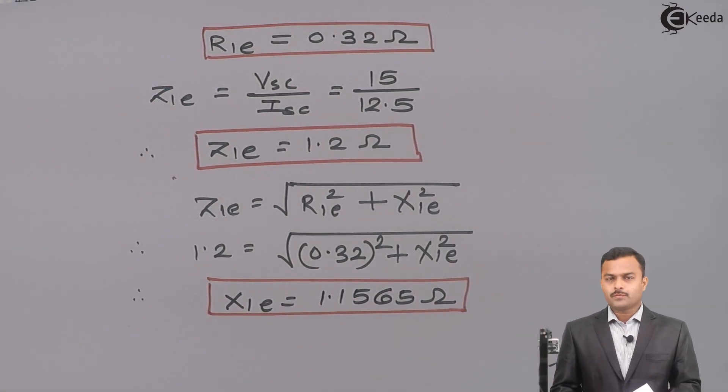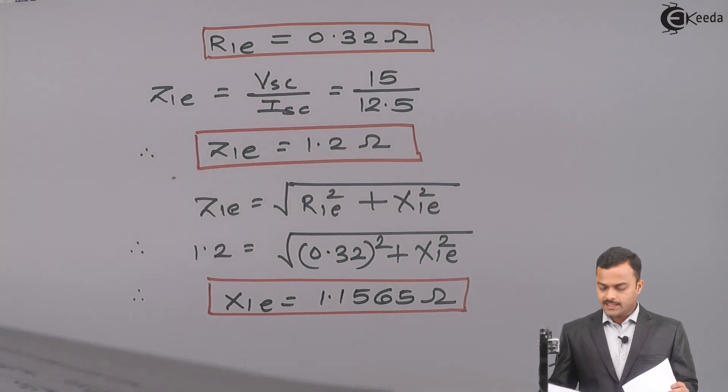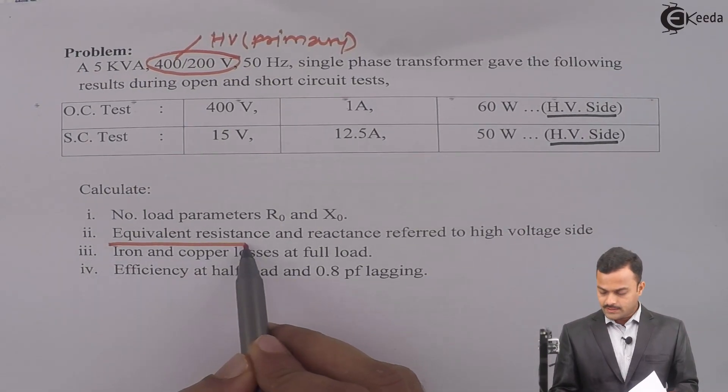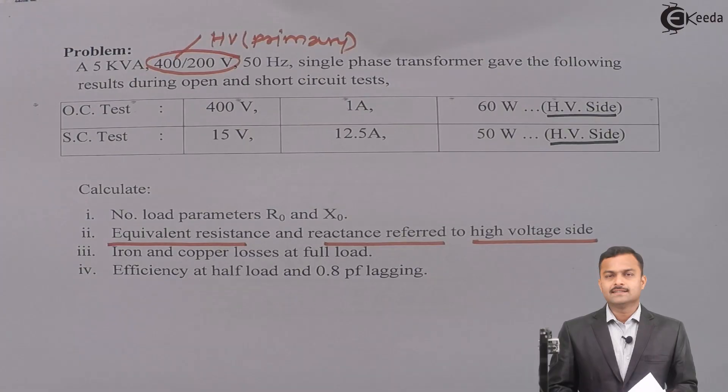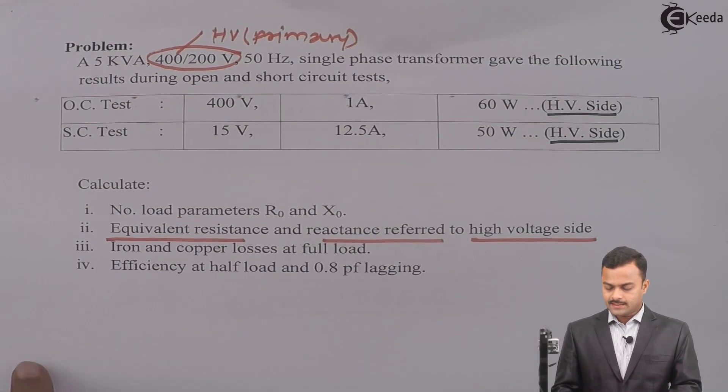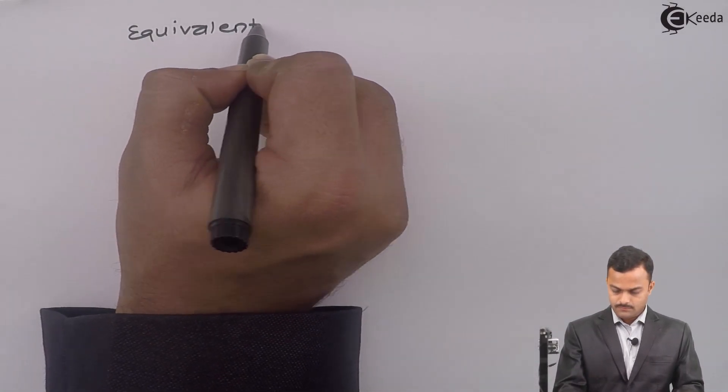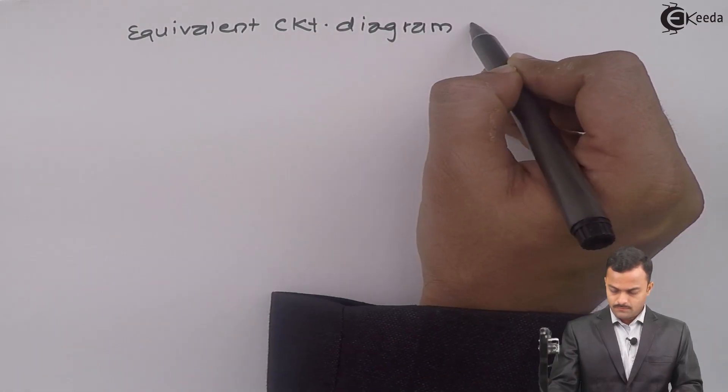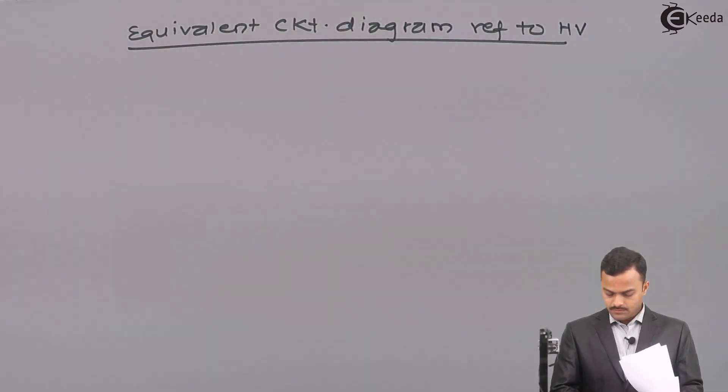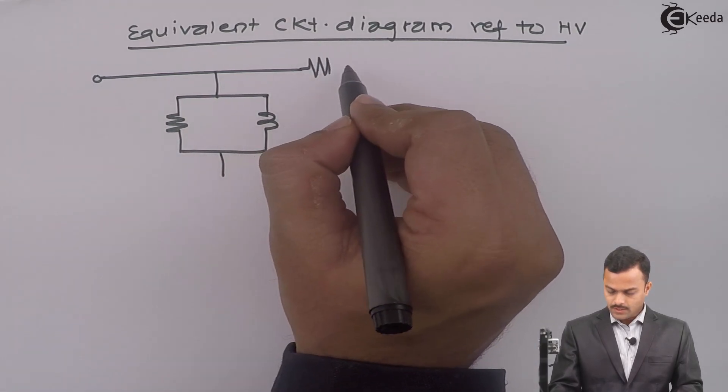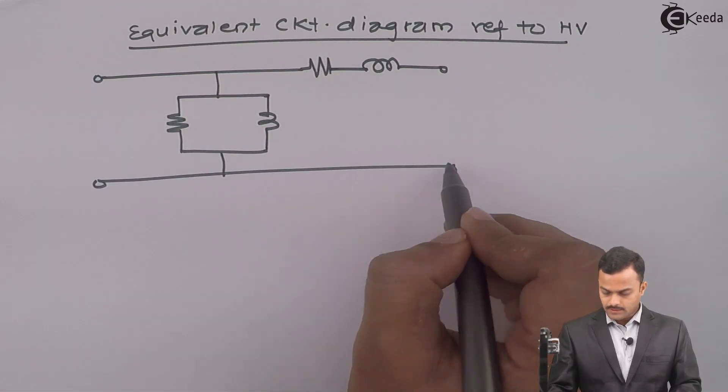Now, we got four parameters of a equivalent circuit of a transformer. Whether you want to refer to other side that idea you will get from where the tests are performed. So, tests are performed on HV side both the tests and we want equivalent circuit referred to high voltage side. So, luckily we are not supposed to refer parameters to other side. Meaning, I can get an equivalent circuit diagram simply like this.